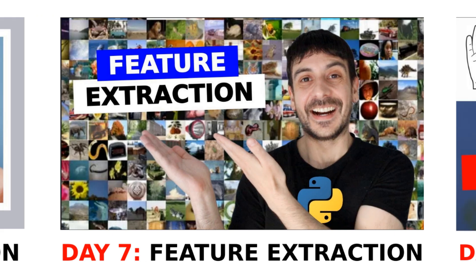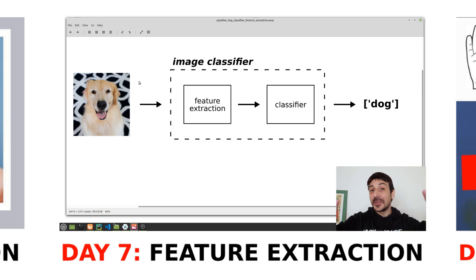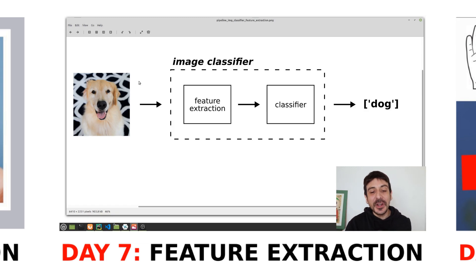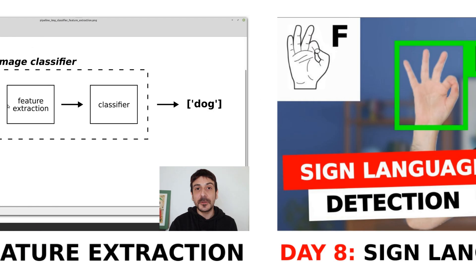Day seven: feature extraction. I'm going to show you a very simple technique to extract features from images and discuss how these features can significantly improve the performance of machine learning models. Understanding this process is fundamental to building more accurate and efficient models.